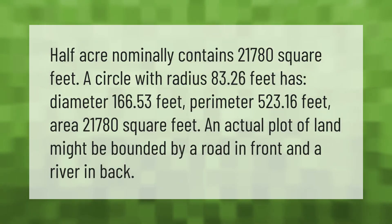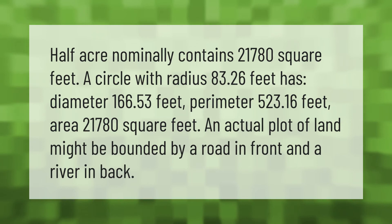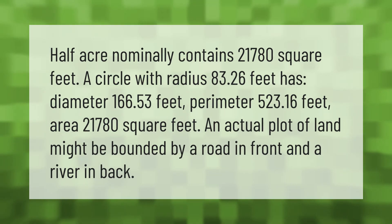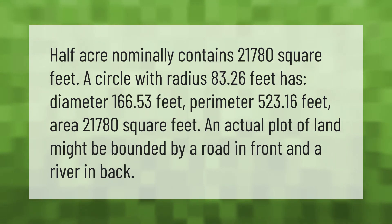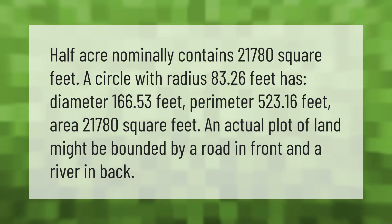A half acre nominally contains 21,780 square feet. A circle with radius 83.26 feet has a diameter of 166.53 feet, a perimeter of 523.16 feet, and an area of 21,780 square feet. An actual plot of land might be bounded by a road in front and a river in back.